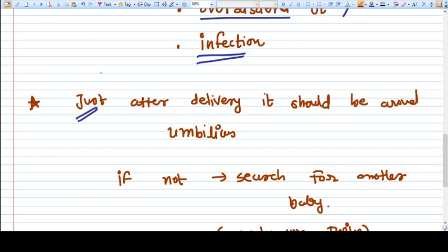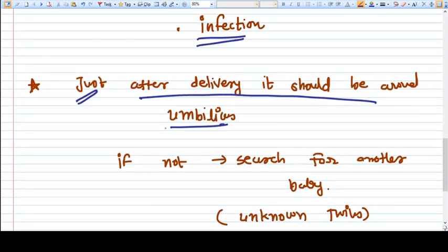When you do duty in the labor room, sometimes you notice that an unknown patient comes already in full dilatation and you deliver one baby, but you don't know that another baby can be there.